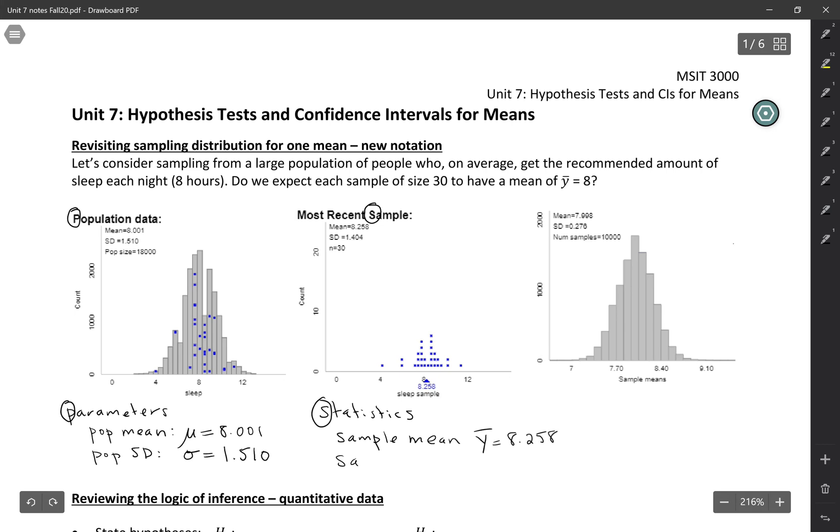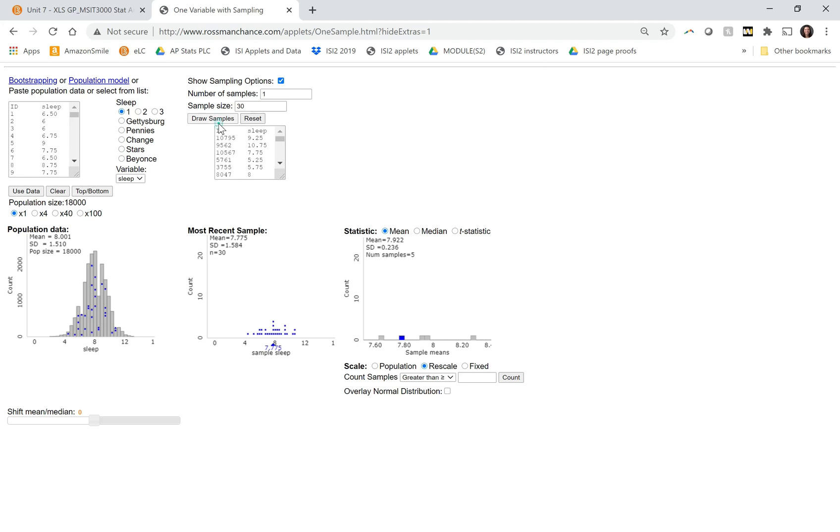And then we also have the sample standard deviation, so the spread of the sample. And the symbol that we're going to use for that is s. And that is 1.404. And this third picture over here, this is showing sample means from all the different samples that we could get.